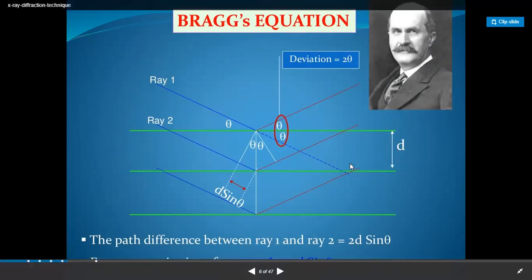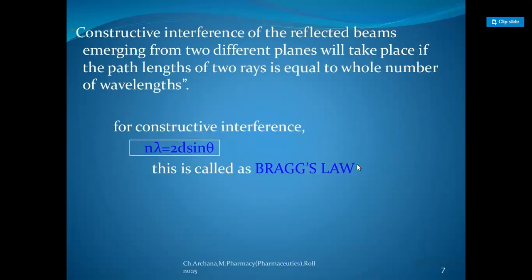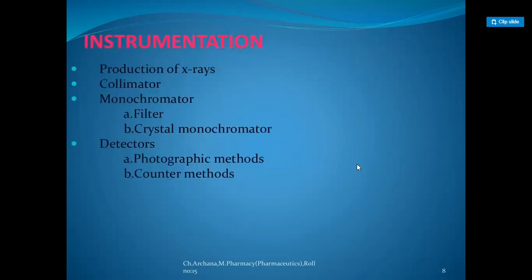The path difference between ray one and ray two is 2d sin θ. From the diagram, there is a plane where atoms are placed at equal distances, and the angle is θ, giving d sin θ for each reflection. The constructive interference of reflected beams from two different planes occurs when the path length equals a whole number of wavelengths. This gives Bragg's law: nλ = 2d sin θ.